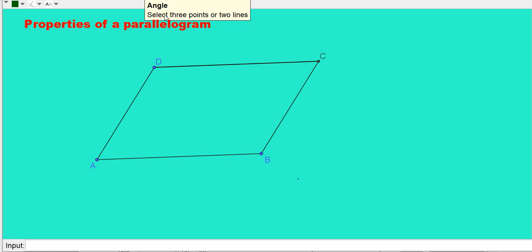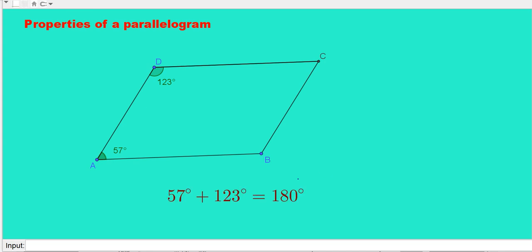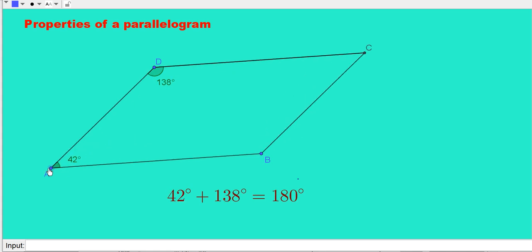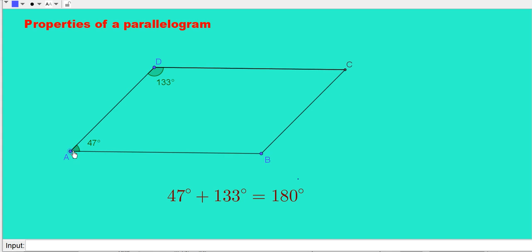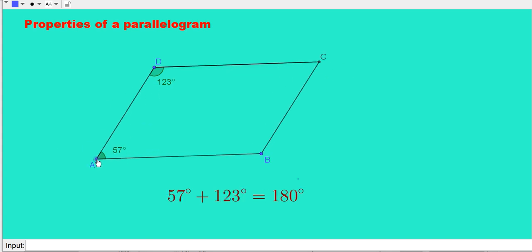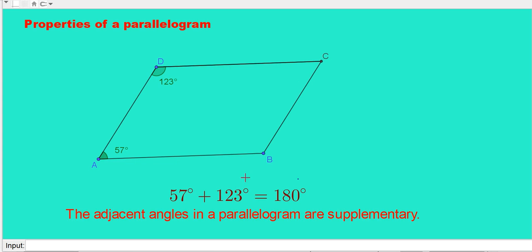Now let me take the measure of any two adjacent angles. Here angle A is equal to 57 degrees and angle D is equal to 123 degrees. Add 57 and 123 — you will get 180. In all cases the sum is equal to 180 degrees. So we can say the adjacent angles in a parallelogram are supplementary. Supplementary means the sum of the angles is equal to 180 degrees.